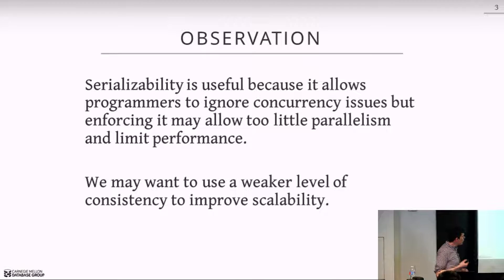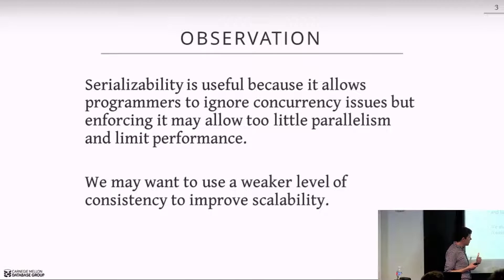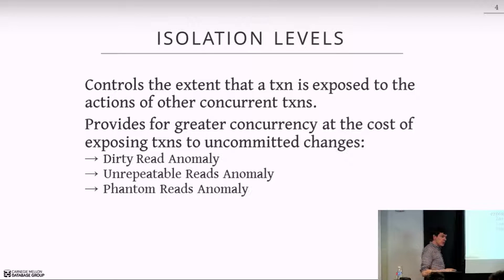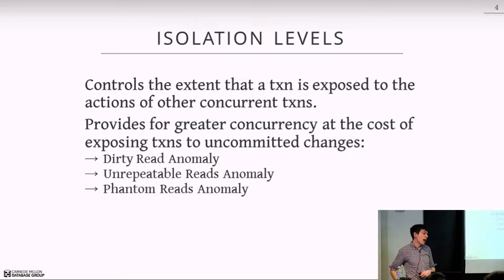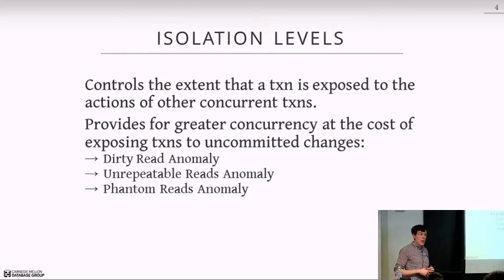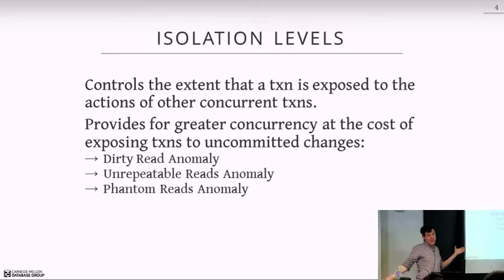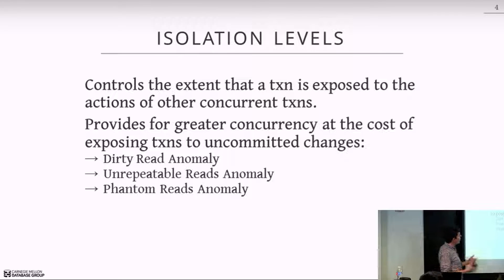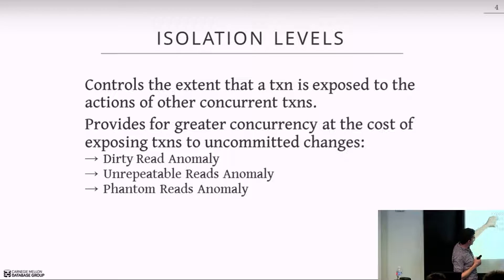We may want to use a weaker isolation level to improve performance and scalability. Isolation levels allow the application to tell the database system to execute a transaction while allowing for some possible anomalies to occur. We're not saying they will occur — we're saying the database won't do extra work to prevent them. If your application only has one thread executing one transaction at a time, it will be serializable regardless of isolation level, because it's running in serial order.